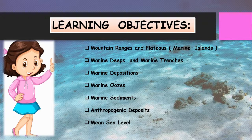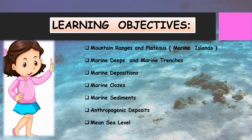The remains of marine plants and animals are mixed in the deposits. This mixture, made up of fine particles around 30%, is called marine ooze. Marine sediments is a mixture of materials deposited on the seafloor. Anthropogenic deposits are objects or materials derived from human activities. Mean sea level is an average level of the surface of one or more of the earth's bodies of water from which height such as elevation may be measured.